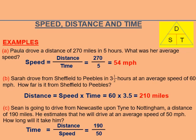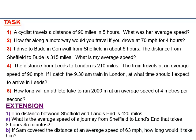Time is equal to distance upon speed. The distance is given as 190 and the speed as 50. The units are corresponding units, so you can do the division and you will get the answer 3.8 hours, which is equal to 3 hours 48 minutes. The 48 minutes came from: 0.8 multiplied by 60, because 1 hour is equal to 60 minutes, so 0.8 × 60 gives you 48 minutes.